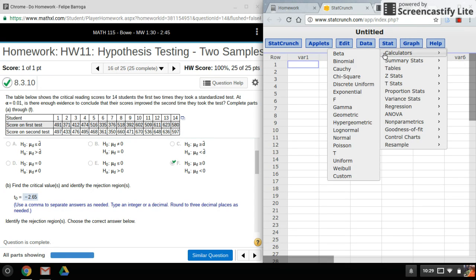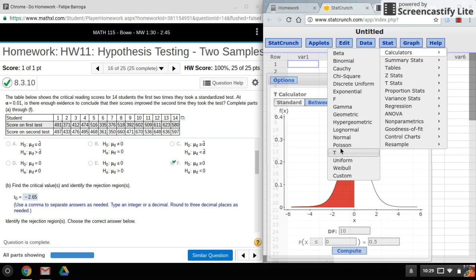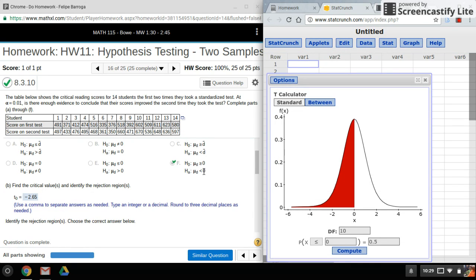So it's going to be stat calculators t. Remember the alternative hypothesis tells you the direction and how many tails. So for this one, this is a one tail test and it's going to be a left tail.